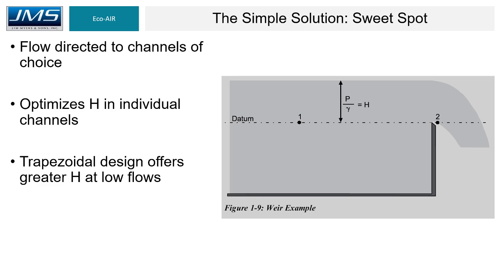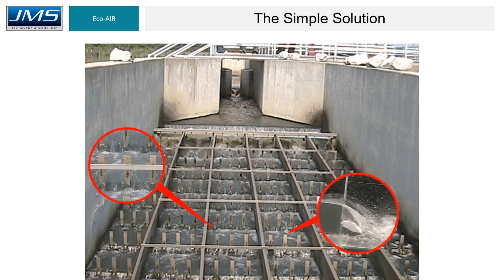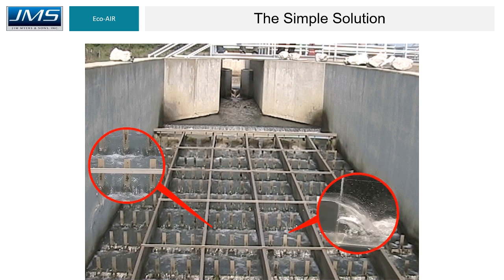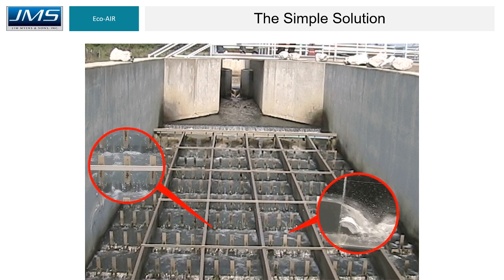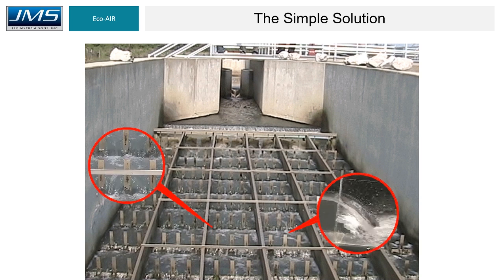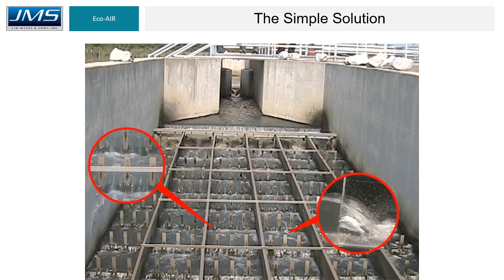H is the water level on each finger weir. As flow is directed to channels of choice via the influent flow control gate, H is optimized in each channel between two and five inches at the respective flow rate. The trapezoidal design offers a greater H at lower flow rates. In just two feet of fall with a floor slope of just four and a half to five and a half degrees, the LPCA accomplishes what in nature would be a waterfall.